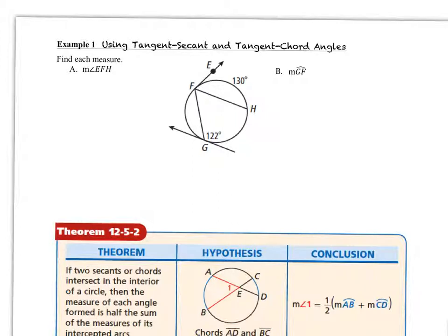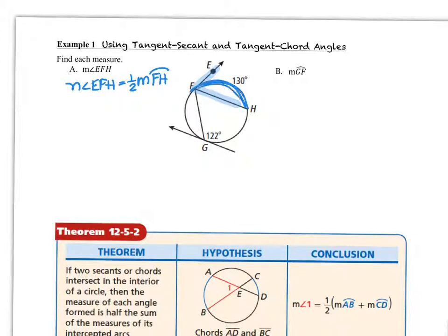On example one, we are going to find the measure of angle EFH. We know that this is a tangent-chord situation, so the measure of angle EFH is one-half of the measure of the intercepted arc FH. Substituting in, the measure of angle EFH is 65 degrees.